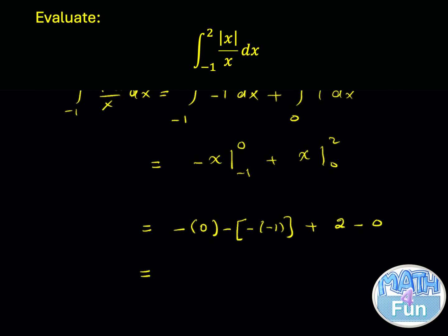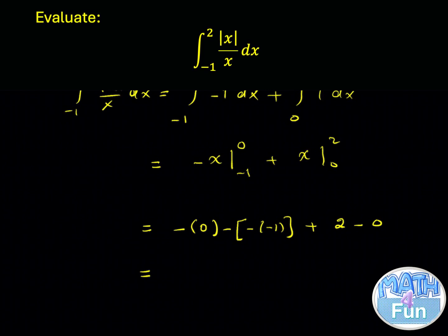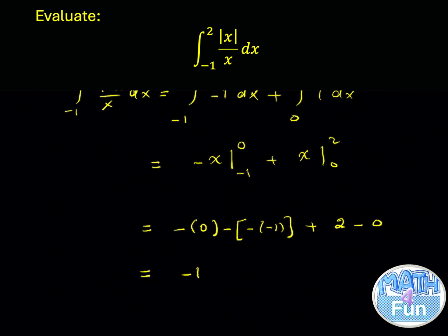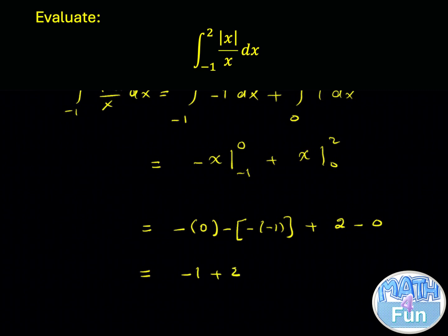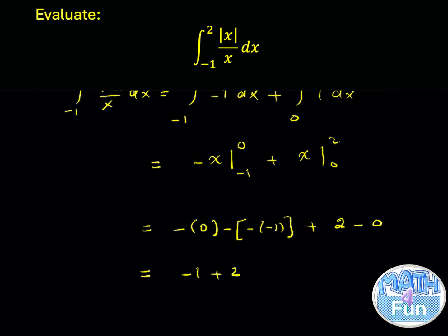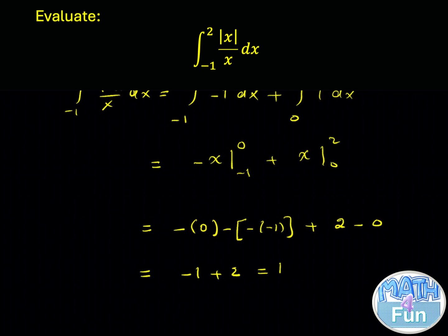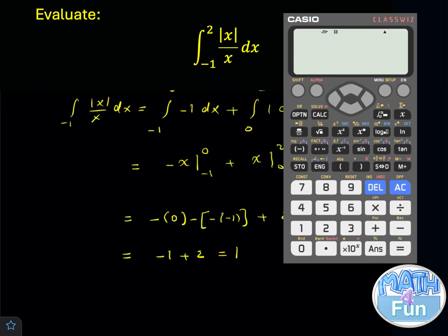Simplifying: minus 0 is 0, minus of minus of minus 1 gives minus 1, plus 2 minus 0. The 0 terms cancel, leaving minus 1 plus 2, which equals 1.